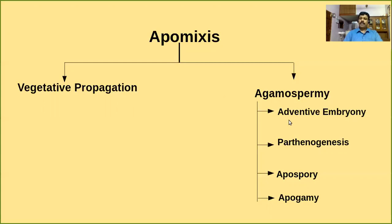Adventive embryony means the formation of embryo directly from the diploid sporophytic cells, such as the nucellus or integuments. Adventive embryony means the formation of embryo directly from diploid cells like nucellus or integuments of the ovule, other than the zygote. This is commonly seen in plants like citrus and mango.